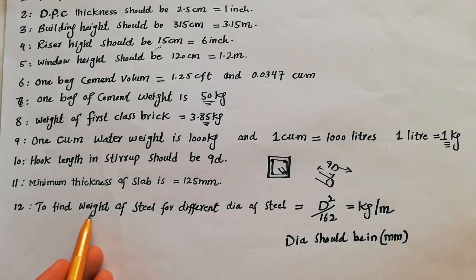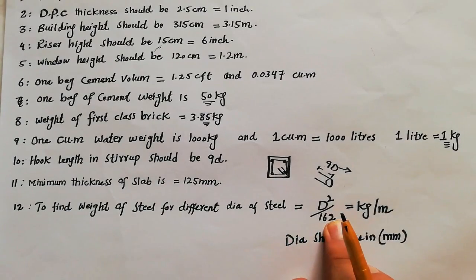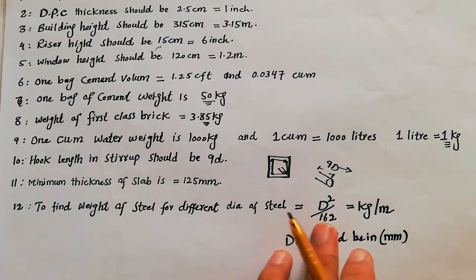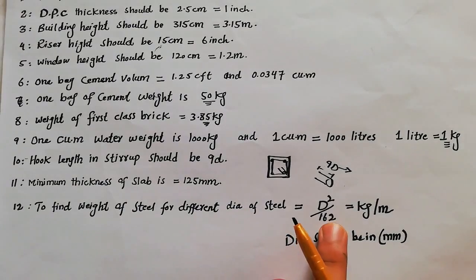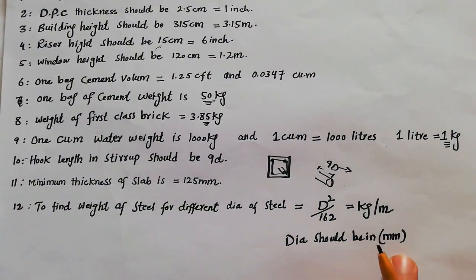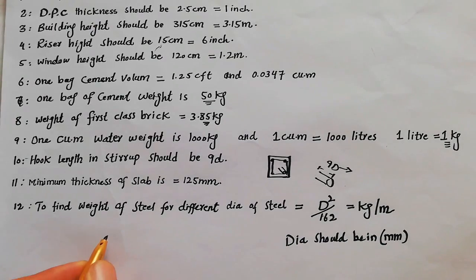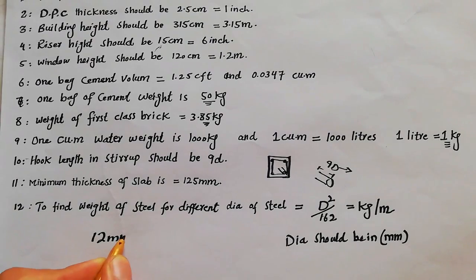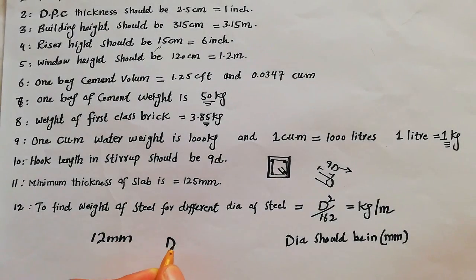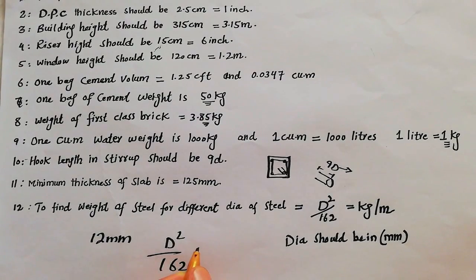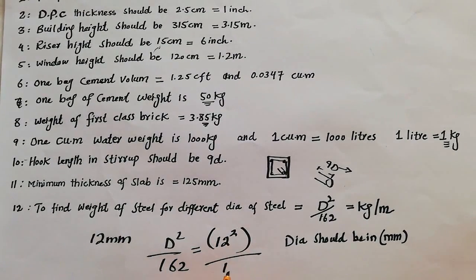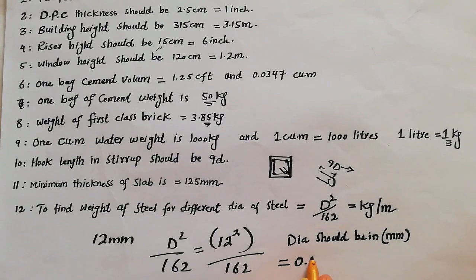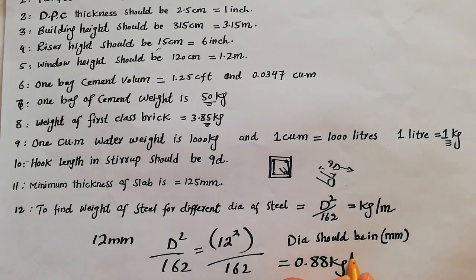And 12th: to find weight of steel for different diameter, use this formula: d squared divided by 162. This formula can give us the weight of steel in kg per meter, and for every kind of diameter we can use this formula. But remember that the diameter should be in mm. Suppose we have to find the weight of steel for 12 mm, so use the formula d squared divided by 162. So here 12 squared because d squared, and divide by 162. So it will give us 0.88 kg per meter.